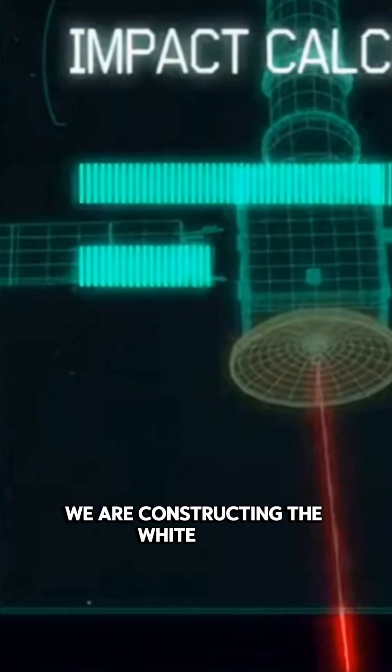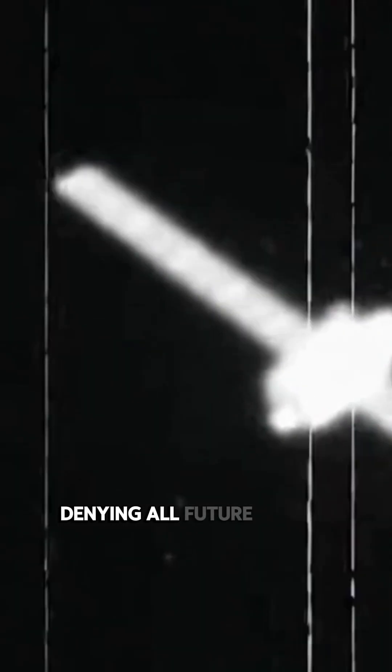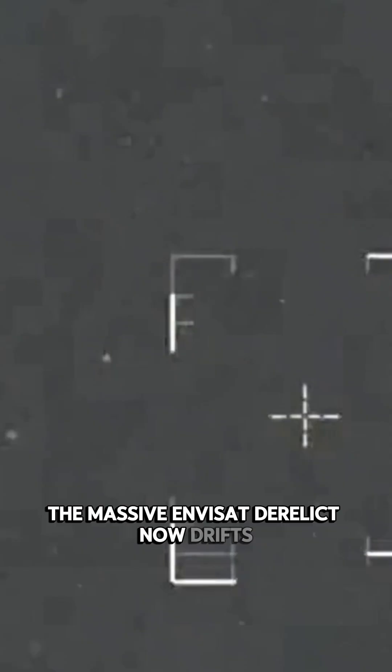We are constructing the white shell, a randomized sphere of silent velocity that acts as a stochastic filter, denying all future escape vectors. The massive Envisat derelict now drifts as a potential super-spreader, waiting to initiate the ablation cascade.